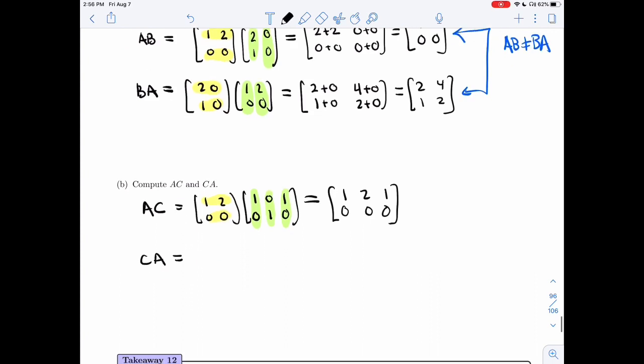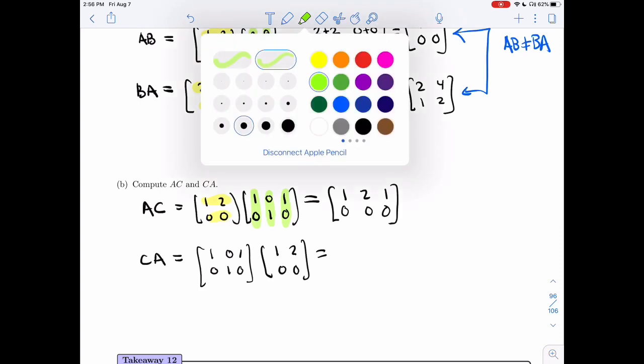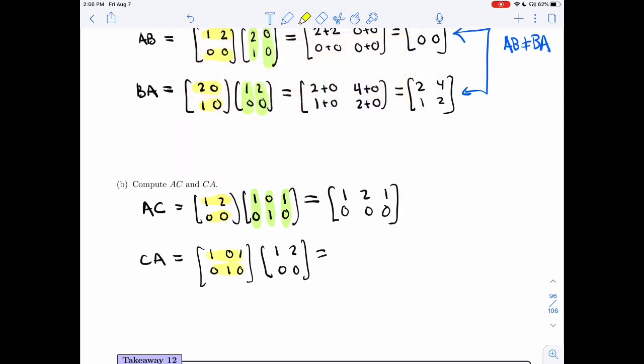And if I do CA, let's see what happens then. I'm going to look at 1, 0, 0, 0, 1, 0, 1, 2, 0, 0. I'm going to take these vectors, dot them, and they're not the same size, and so I cannot.